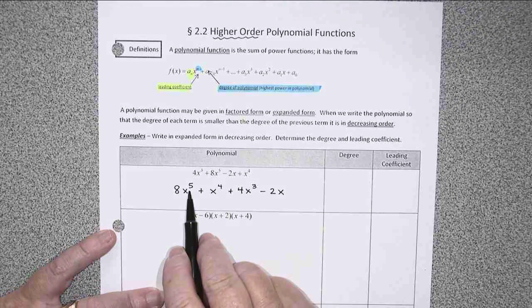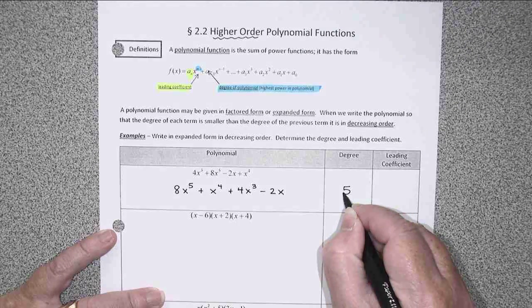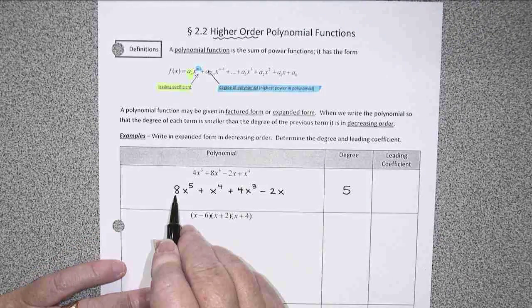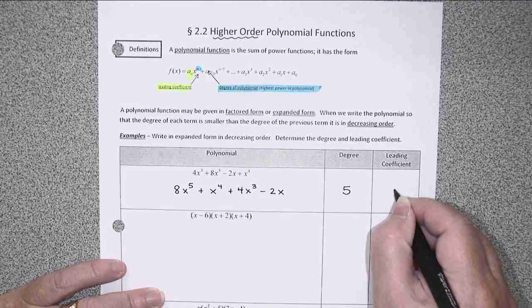Notice that the degree of my polynomial is 5, the highest power. The leading coefficient is 8, the multiplier on that highest power term.